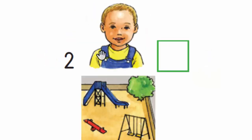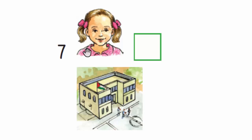D. Zaid is at the playground. E. Jamila is at school.